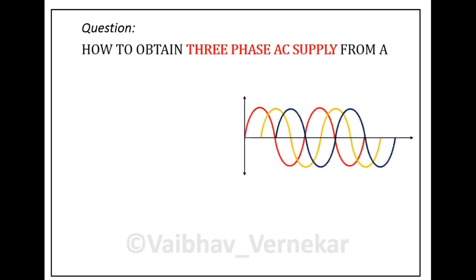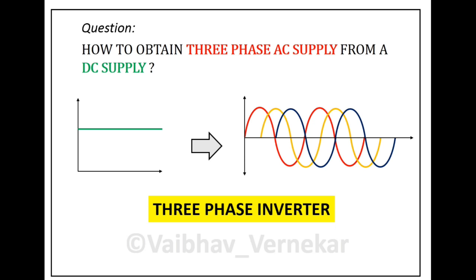Hi there, the question for the day is how to obtain a 3-phase AC supply from a given DC supply. The solution to the question is a 3-phase inverter.